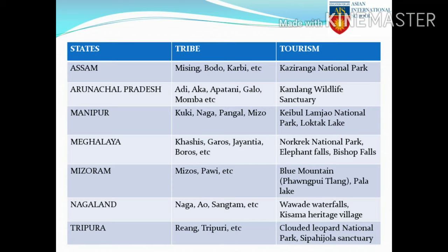Looking at the North Eastern states with their tribes and tourist spots: In Assam, the tribes like Missing, Boro and Karbi are found, with Kaziranga National Park as the famous tourist spot. In Arunachal Pradesh, tribes like Adi, Akka, Apatani, Galo and Mumba are found; Kamlang Wildlife Sanctuary is the tourist attraction. In Manipur, tribes like Kuki, Laga, Pangal and Mizor are found, while Keibul Lamjao National Park and Loktak Lake are famous tourist spots.